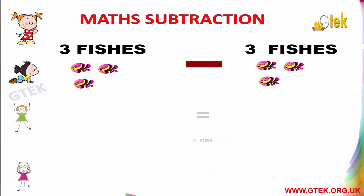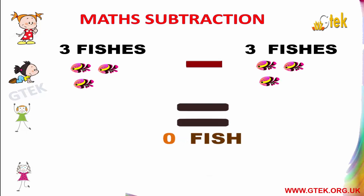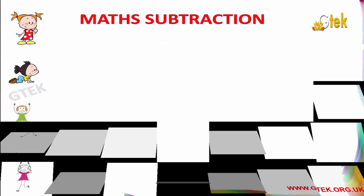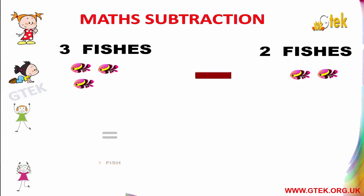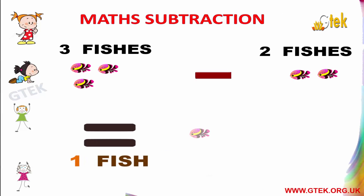3 fishes minus 3 fishes equals 0 fish. 3 fishes minus 2 fishes equals 1 fish.